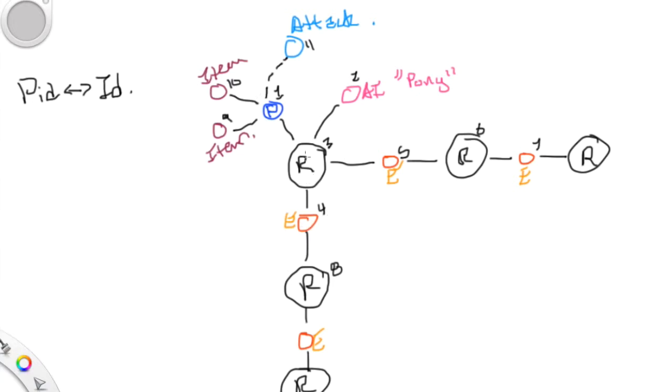Every object in Earlmud is a process. Everything. Exits are processes, rooms are processes, enemies are processes, items are processes, everything.